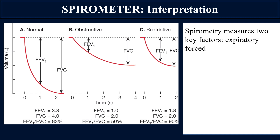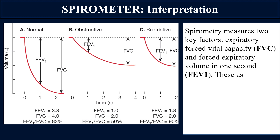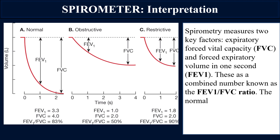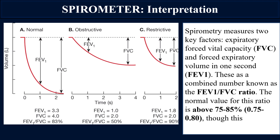The normal ratio for forced expiratory volume to forced vital capacity is 75 to 85 percent (0.75 to 0.85). As shown in the graph, a normal value is around 83 percent. If the ratio is less than 75 percent, as shown here at 50 percent, it indicates obstructive lung diseases. If the value is higher than 85 percent, as shown here at 90 percent, it indicates restrictive lung diseases. Examples of obstructive diseases include asthma and COPD; restrictive diseases include fibrosis, scars, and muscular diseases.